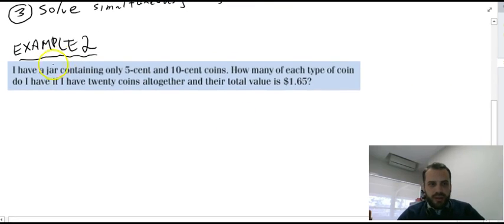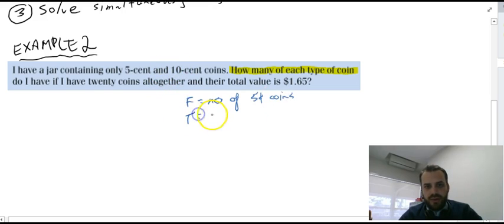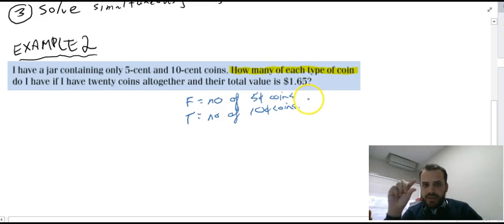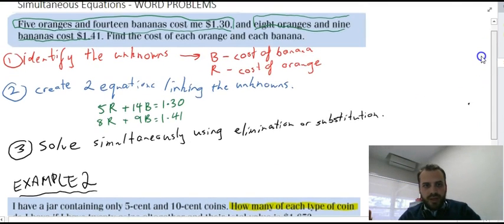So here's my second word problem. I have a jar containing only 5 cent and 10 cent coins. How many of each type of coin do I have if I had 20 coins all together and their total value is $1.65? So step one, what was step one again? Identify the unknowns. So what am I trying to find? How many of each type of coin? So they're going to be my unknowns. So 5 cent coins, F for 5, F equals number of 5 cent coins, and T for 10 cent coins. So there's my unknowns, F for 5 cents, T for 10 cents.